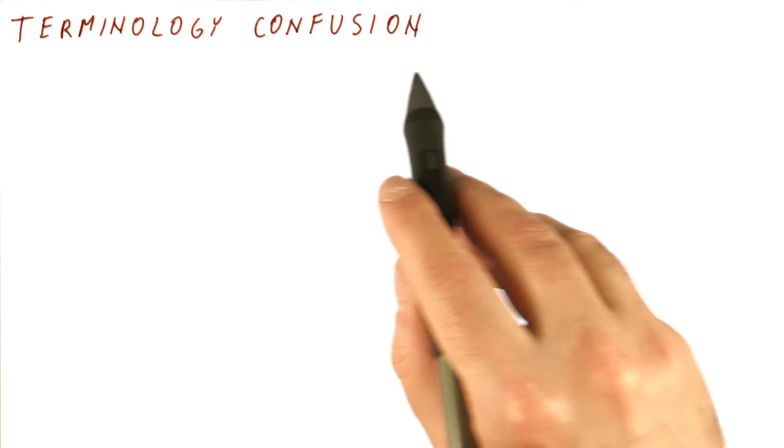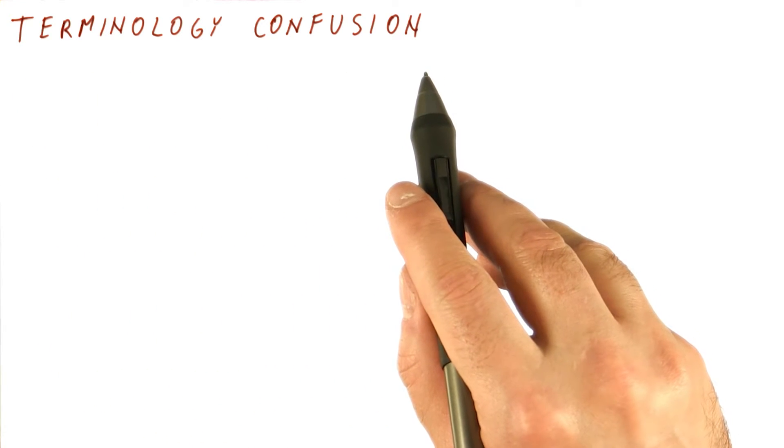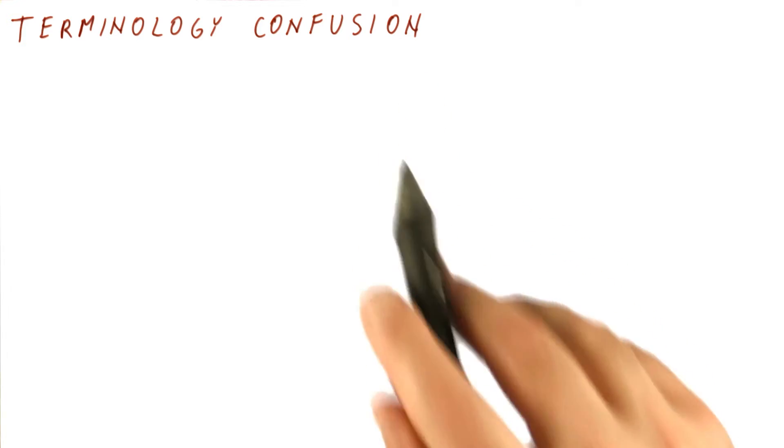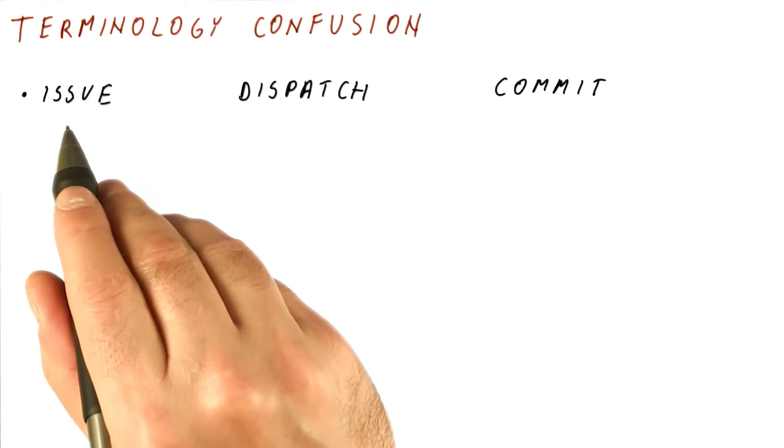One of the things we should discuss is the terminology confusion about out-of-order processors and how we name different parts of them. We have been calling the stages of the execution.